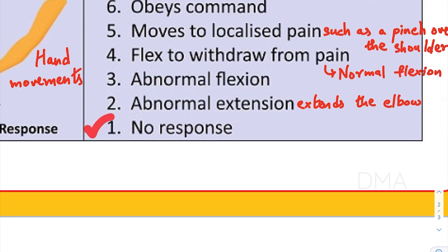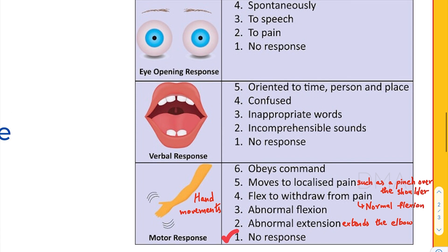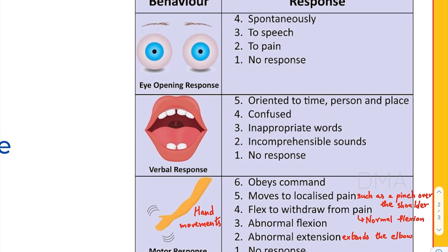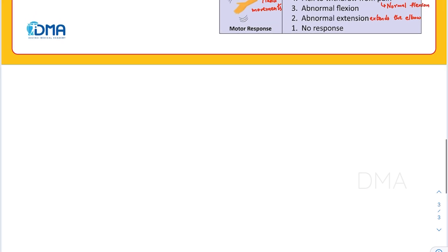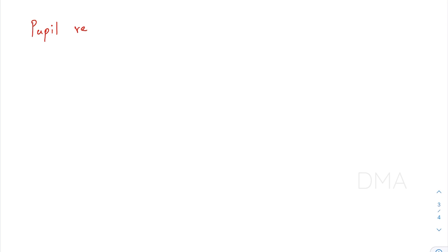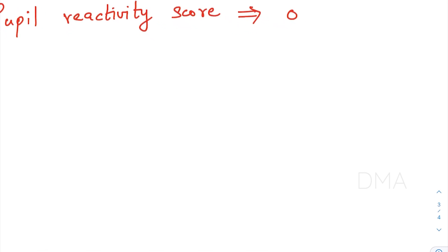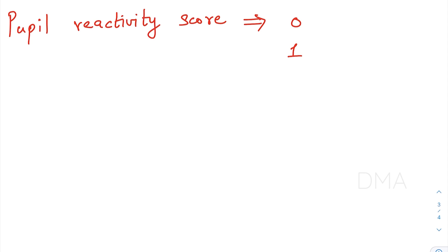There is a recent development in the Glasgow Coma Scale: the addition of a pupil reactivity score. We introduce a light stimulus to both eyes. If both eyes are reactive, the score is zero. If one eye is reactive and the other is unreactive, the score is one. If both eyes are unreactive to the light stimulus, the score is two.